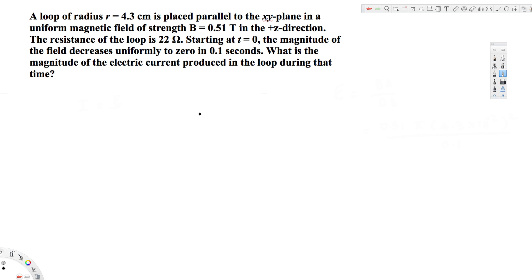magnitude of the electric current produced in the loop during that time? To find the current, we can use the equation I = emf